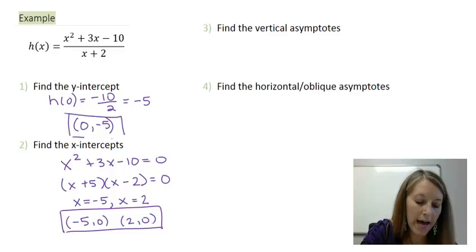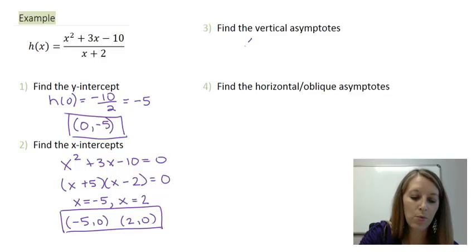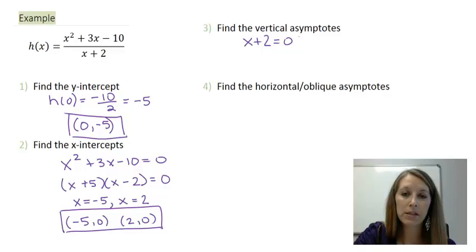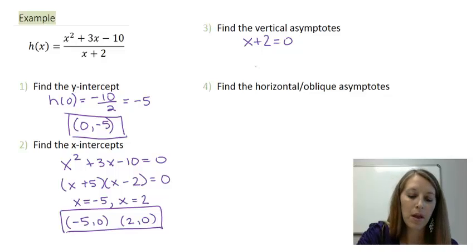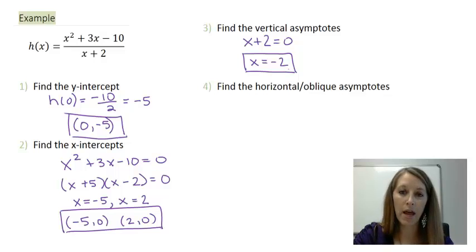Finding the vertical asymptotes, that's where our function is not defined. So since it's a rational equation, it's where the denominator equals 0. So I do it by setting my denominator equal to 0. I isolate my variable, and that gives me x equals negative 2. This is in the format that we want it, because this gives us the equation of a vertical line.